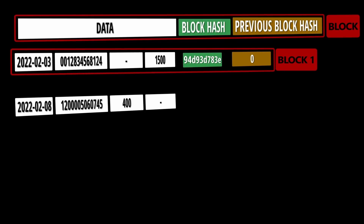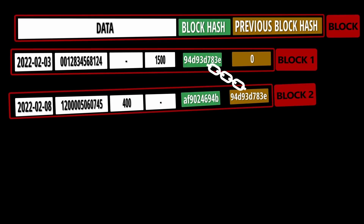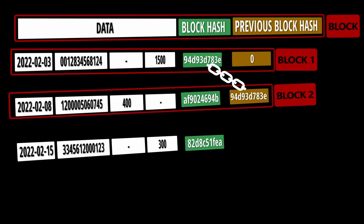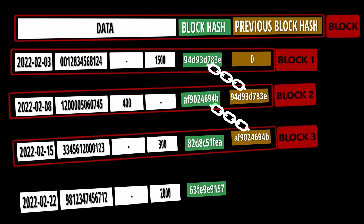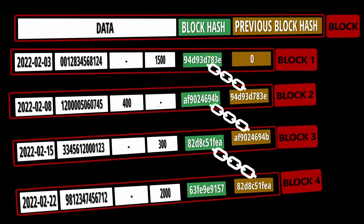For the second transaction, we generate a hash. Here we have a previous block, so let's add the hash of the first block as the previous block hash to this block. Block 1 and 2 are now chained together — the second block is now dependent on the first block because of the previous block hash linkage. Similarly, a third and fourth transaction each generate a hash and are linked to the previous block. As you can see, each block in a blockchain is linked together by the previous block hash.